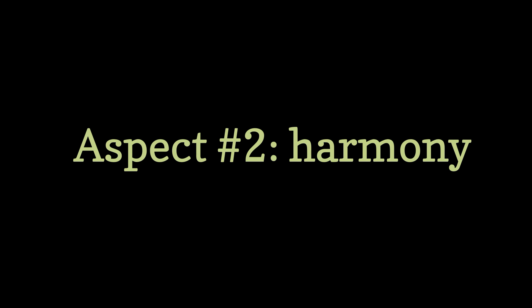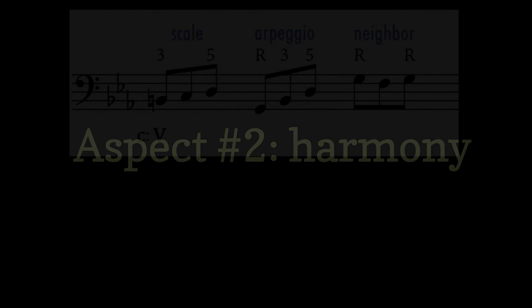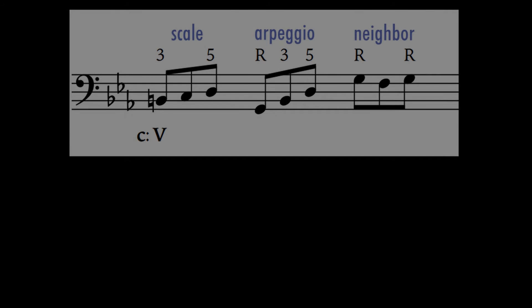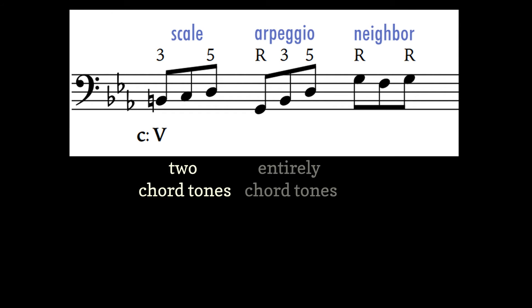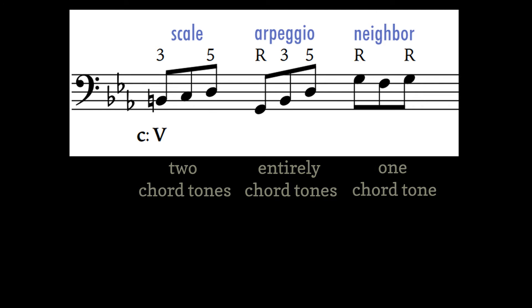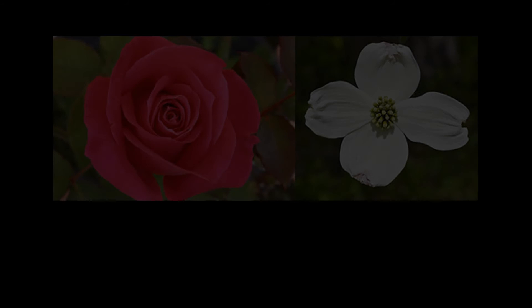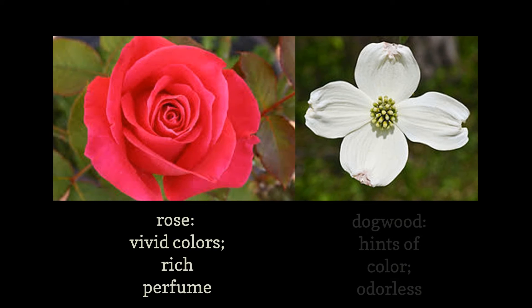The second aspect I'd like to mention is that different melodic figures project harmony in different ways. I already showed you this with scale, neighbor, and arpeggio figures in the Bach example. We definitely get a sense of the harmony from all of them, though the arpeggio is the most vivid, while the neighbor figure is milder — meaning there's only one chord tone. Going back to flowers, some flowers have intense colors and fragrances, while others have fainter hues and might not smell at all.